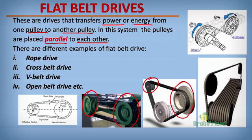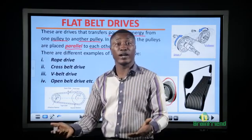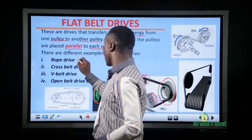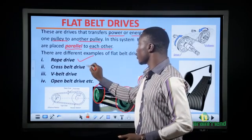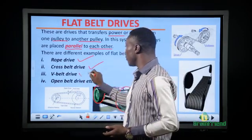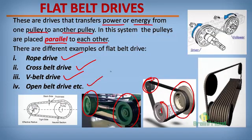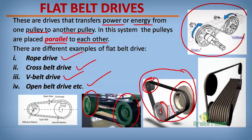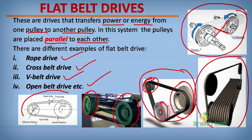There is a transfer of power or energy from one pulley to the other. We have different types of flat belt drive: rope drive, cross belt drive, V-belt drive, and open belt drive. This is a good example of a V-belt drive. This is a cross belt drive — you can see the belt is in a cross form. And this is the rope belt drive and open belt drive.